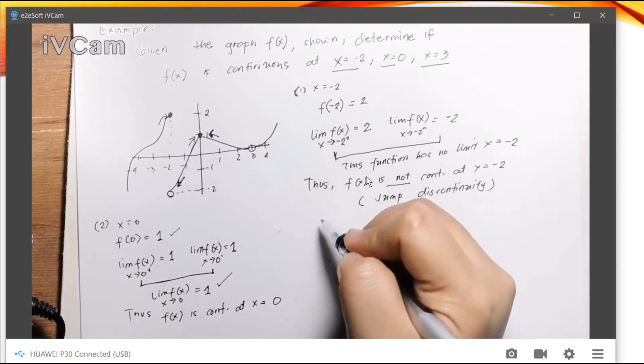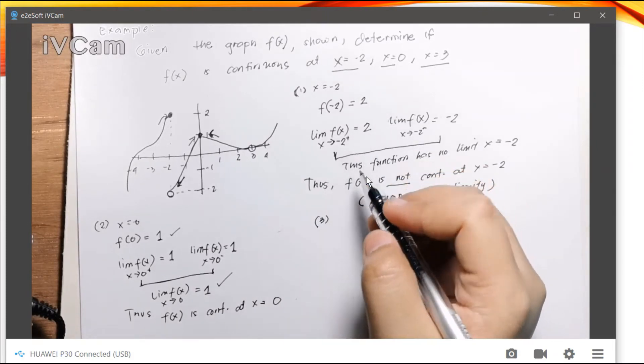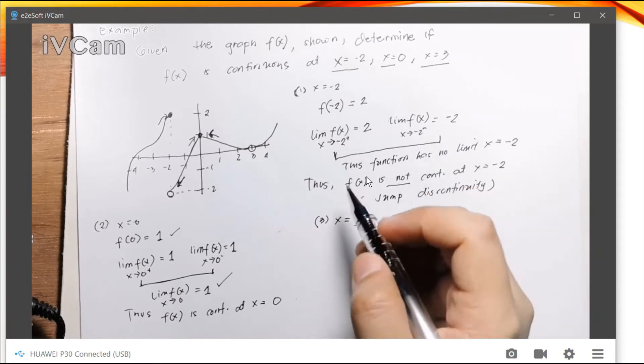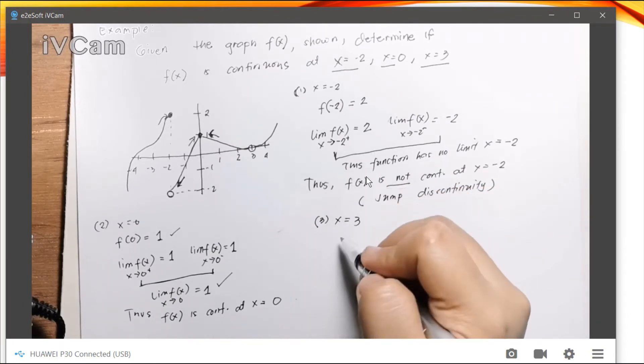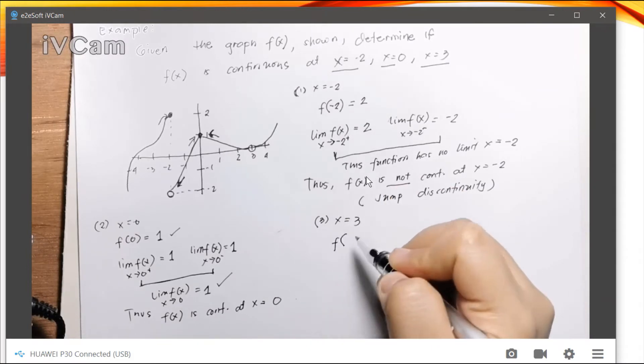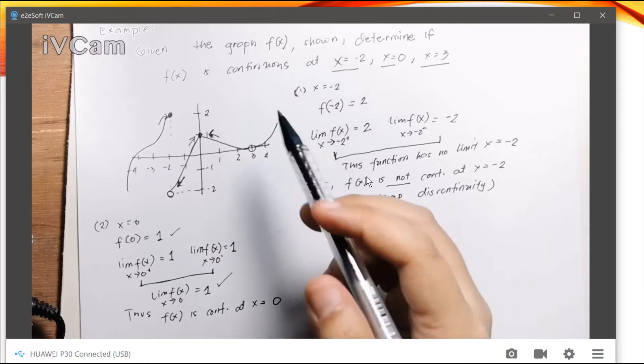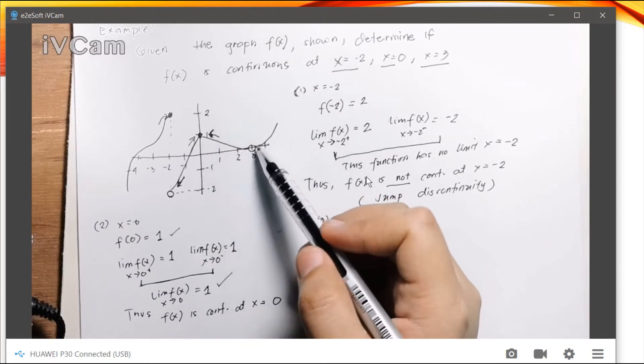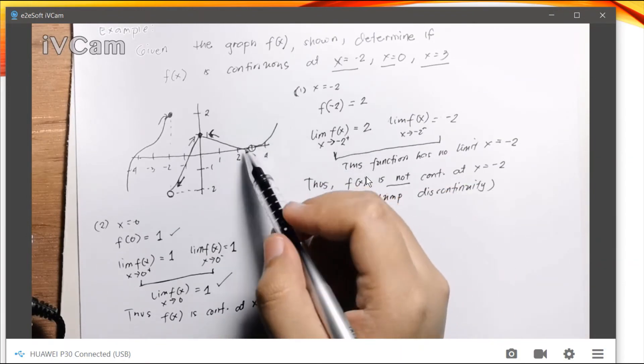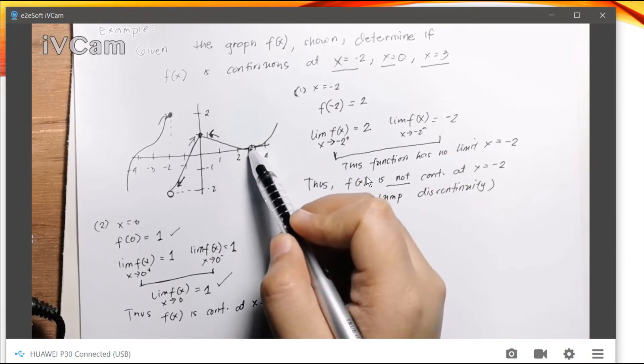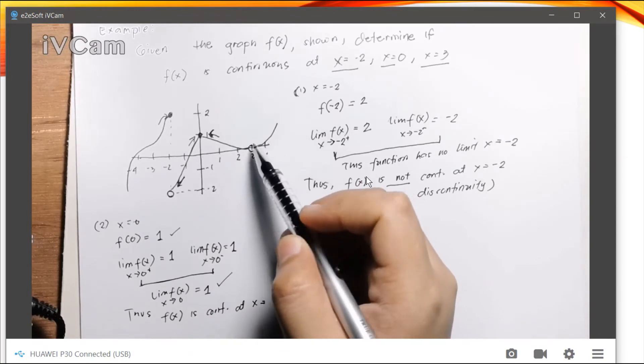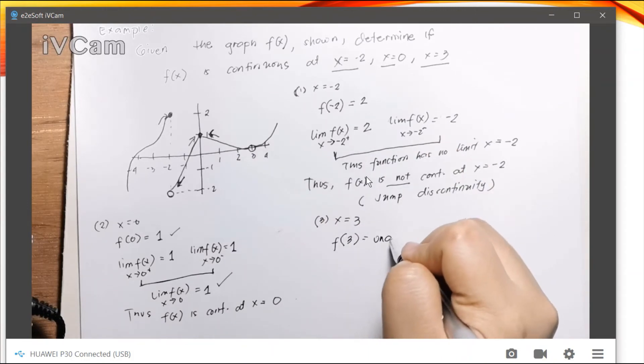Now let's proceed to the third point, or the third value of x, which is x equals 3. So again, let's look at the graph. Of course, if we substitute x as 3 in the function, it has no value. Since it's undefined at that point, since there's no value, so it is undefined.